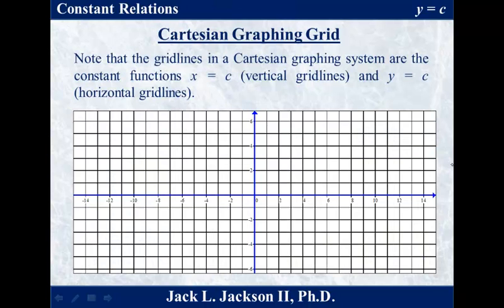Finally, I just want to bring up one thing we should note. Notice that the grid lines in a Cartesian graphing system, or a rectangular graphing system, are just the constant functions: x equals a constant gives the vertical grid lines, and y equals a constant gives the horizontal grid lines. So the grid lines are your constant functions when you're looking at a Cartesian graph. It's sometimes called a rectangular coordinate system because when you graph all of these vertical and horizontal lines, you see bunches of little rectangles formed there.